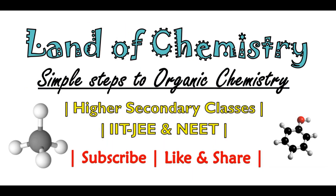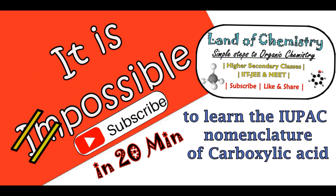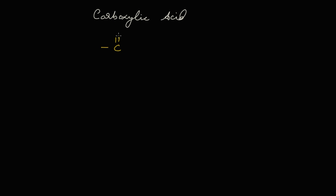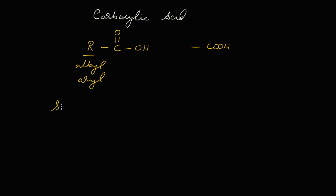Hi, welcome to Planet of Chemistry — Simple Steps to Organic Chemistry. In this video we are going to learn the IUPAC nomenclature of carboxylic acid. The functional group of carboxylic acid is C double bond O, O-H. We can write it as COOH. Here R can be attached — this R can be either alkyl or aryl.